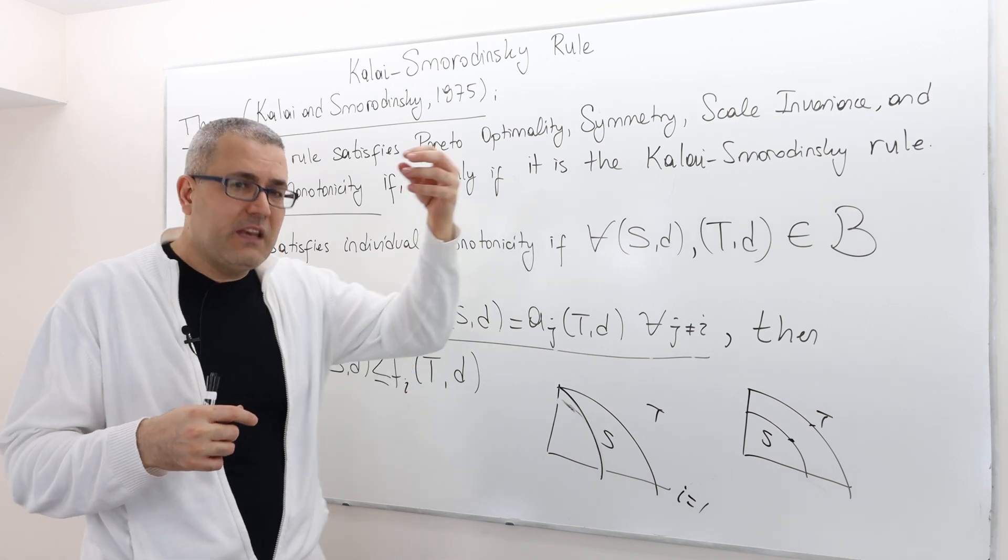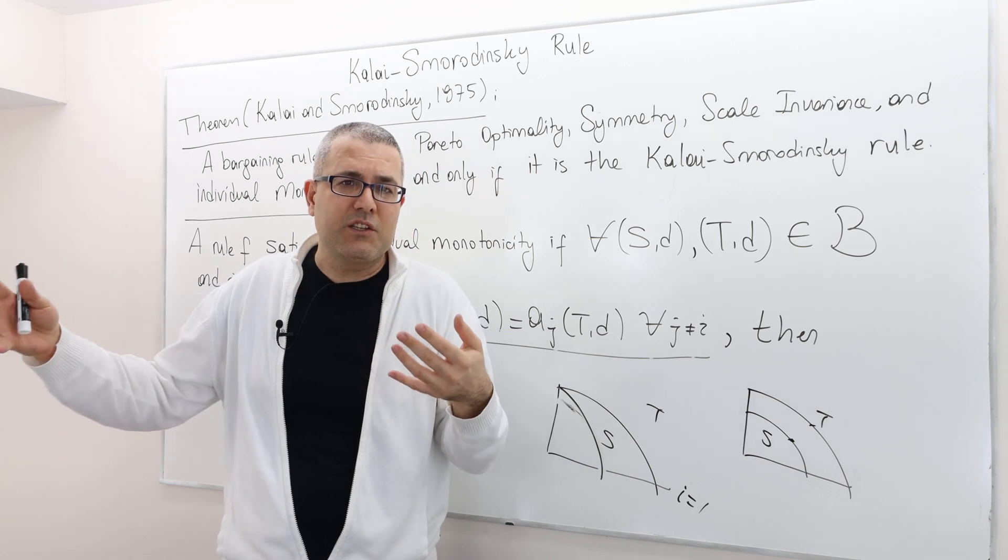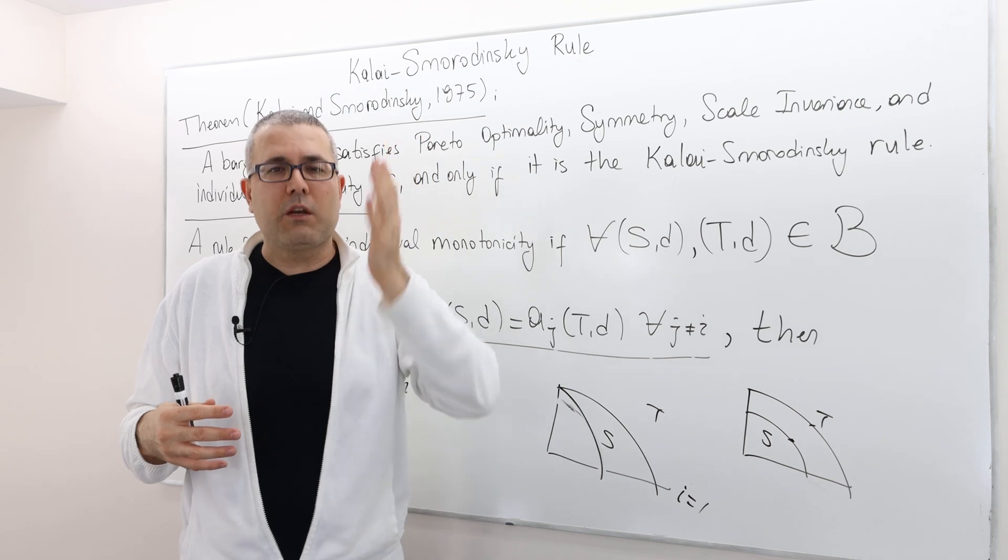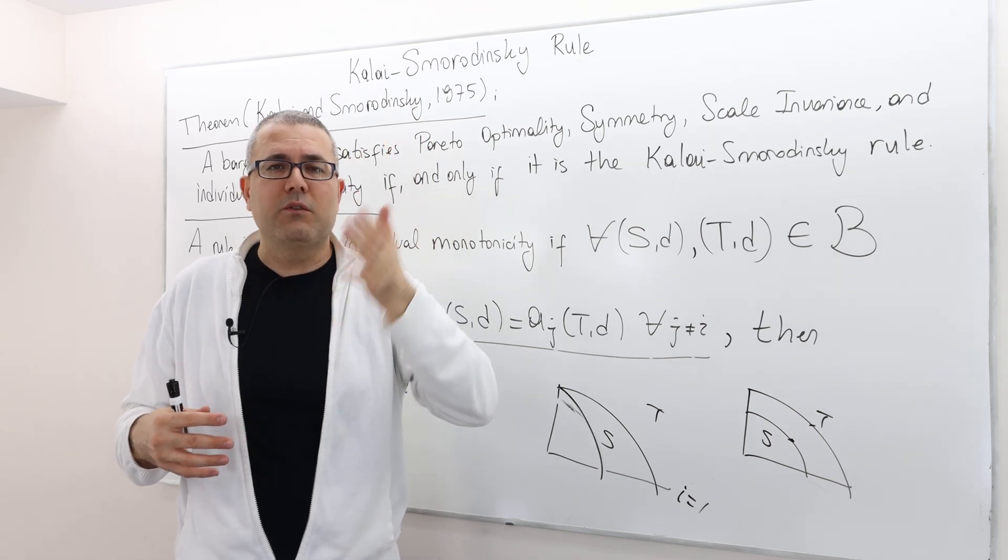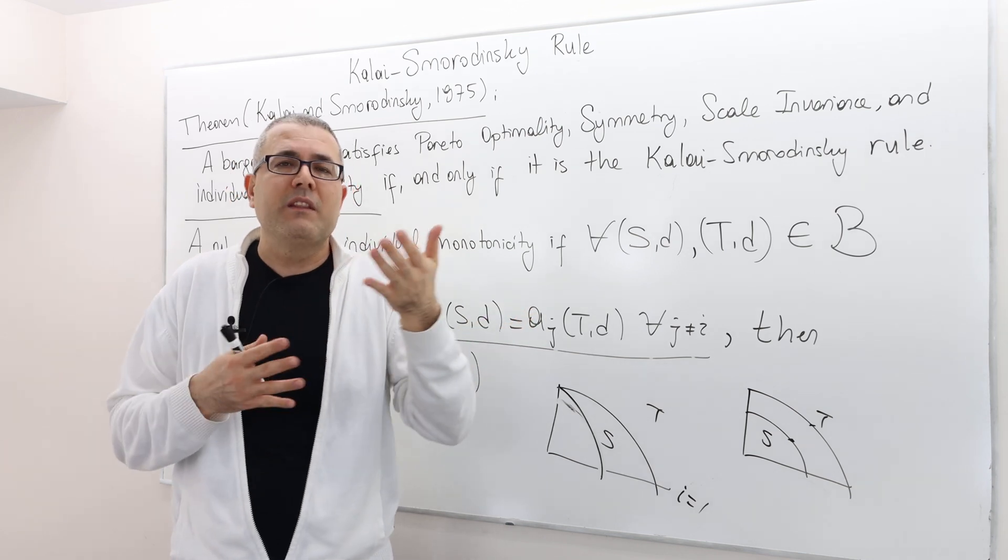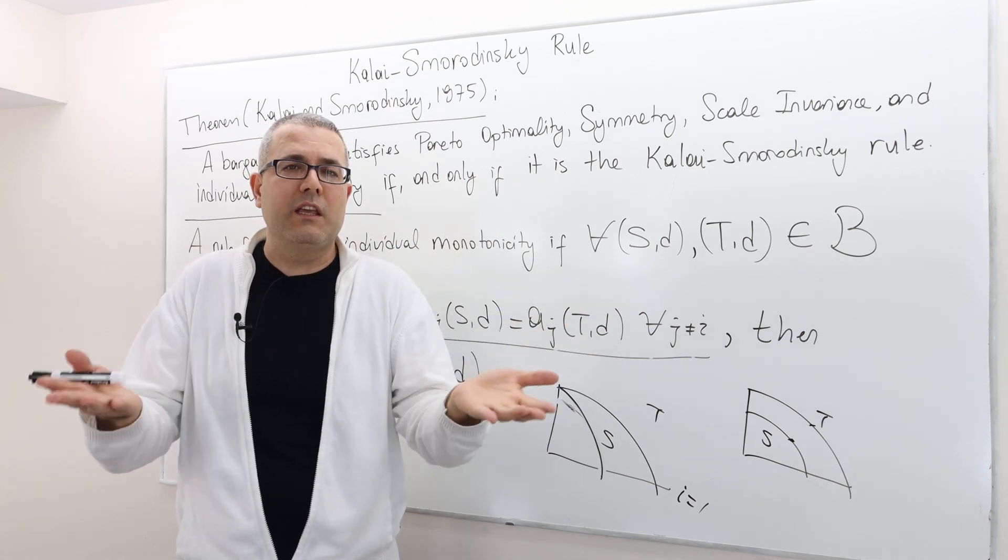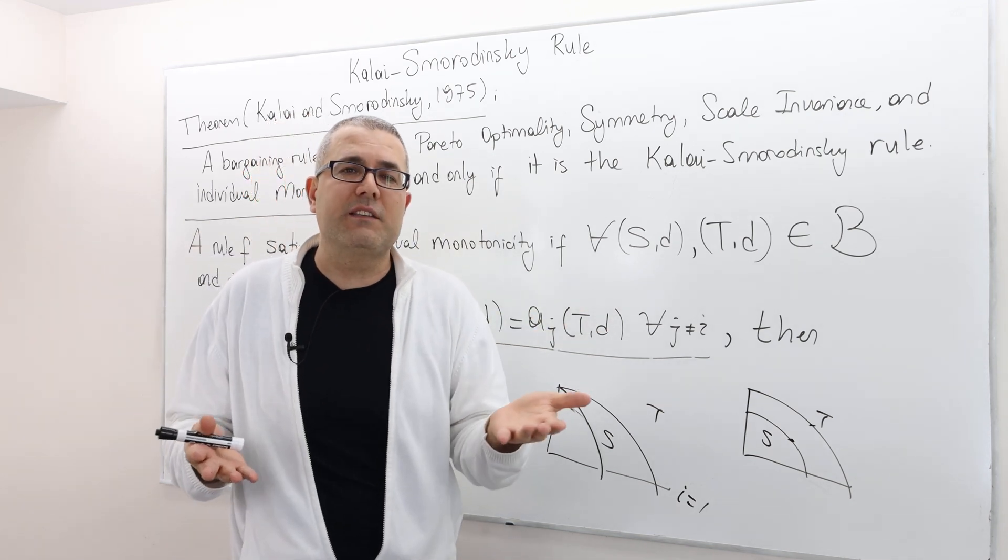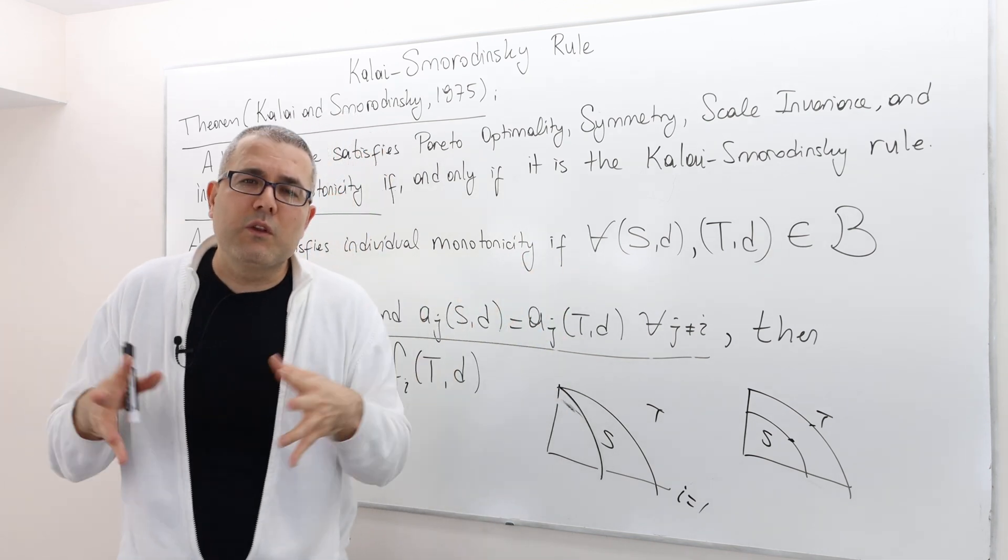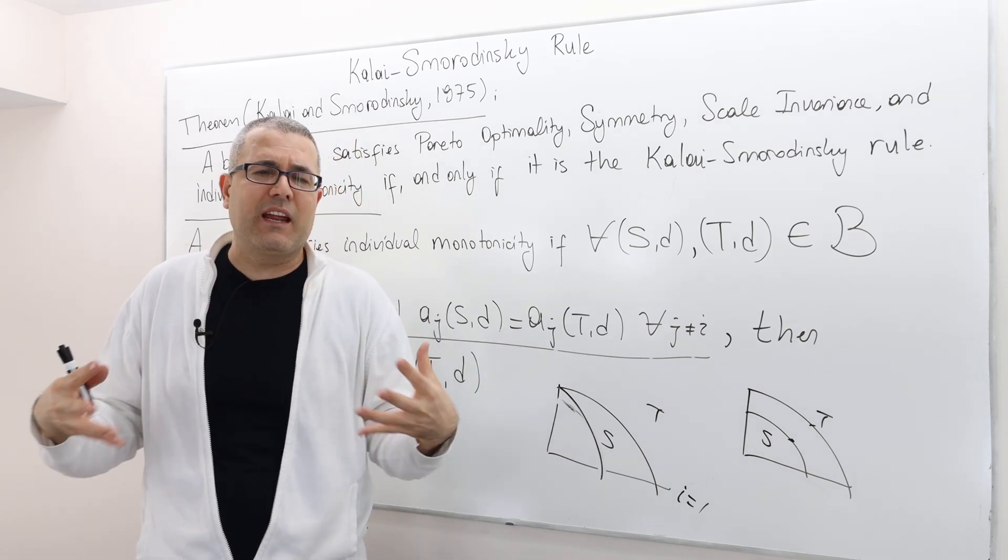We don't want to make our assumptions too strong. We want to keep our assumptions as weak as possible. And so, given that we have very weak assumptions, we would like to get a characterization. So if you have a very strong assumption, like player one is always going to get, player one and player two are always going to get half and half, right? This is a very strong assumption. So obviously, the characterization result is going to be simple. Well, there's only one rule that is going to satisfy this axiom, which is always give the half and half. However, we would like to make the assumptions weaker, axioms weaker, and then make the characterization.